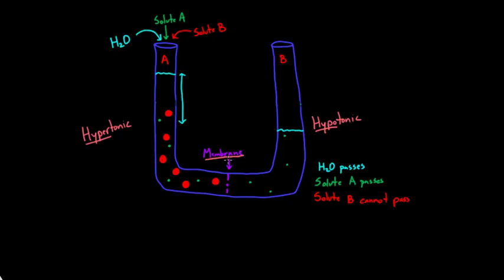You can also see another interesting thing, which is that the only reason that side A became hypertonic was because we have this solute B that couldn't pass. It's because of something not being able to pass the membrane that it offered a chance for side A to become hypertonic. In a way, this inability to pass is what led to tonicity. The fact that you have a difference in tonicity, specifically more tonicity on side A, is a direct result of the fact that solute B couldn't pass through the membrane. Just keep that in mind because that's a really important point.